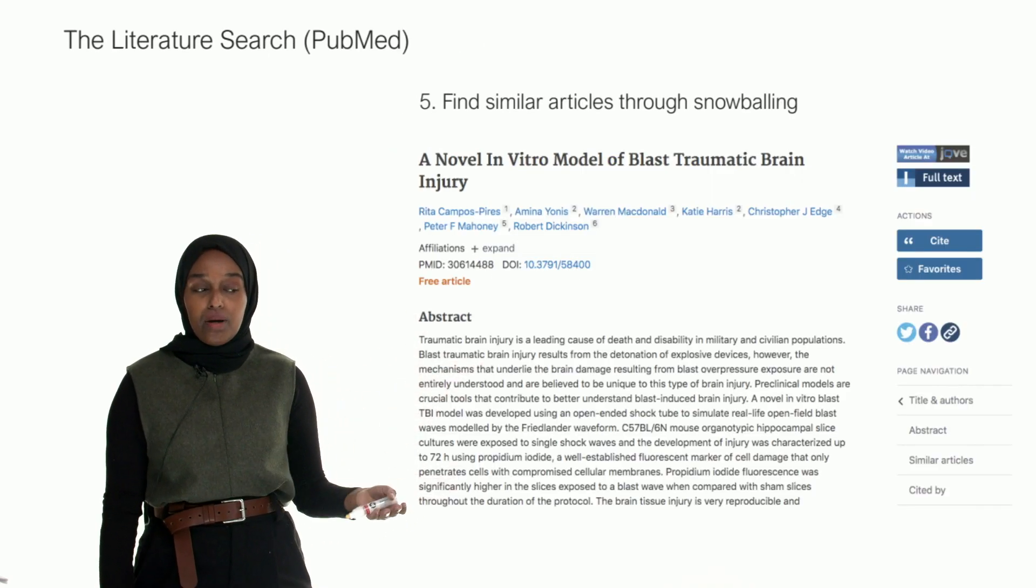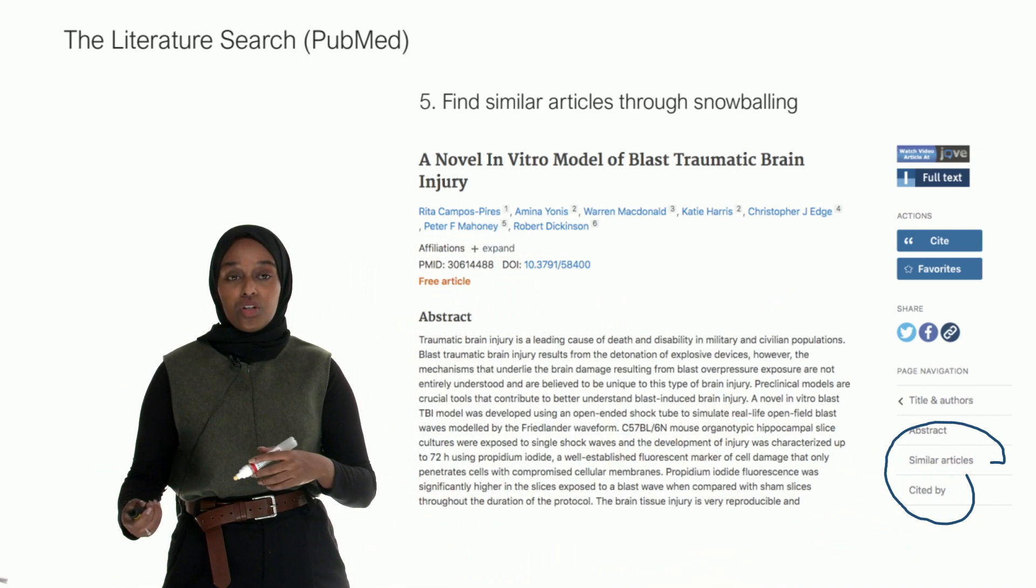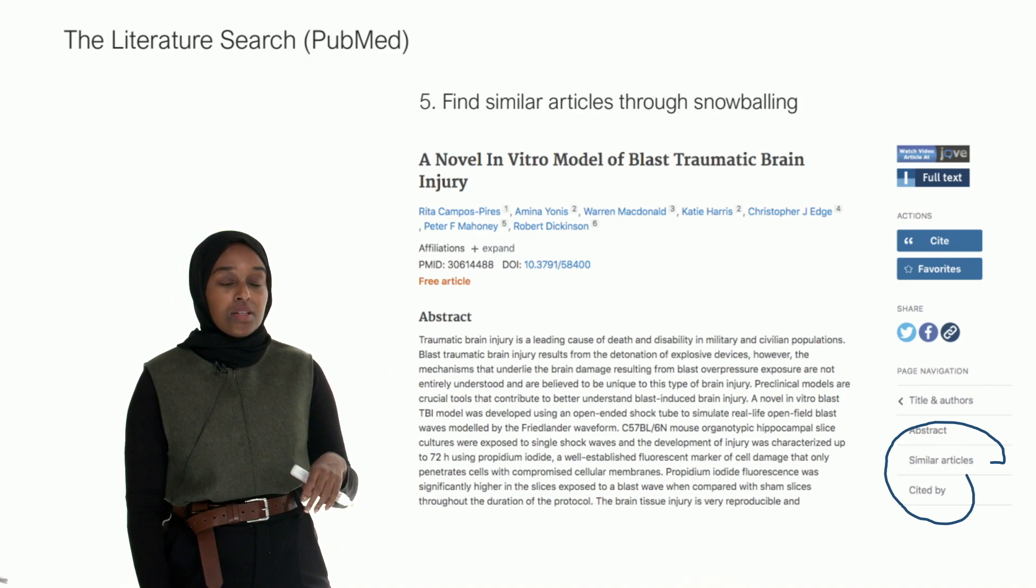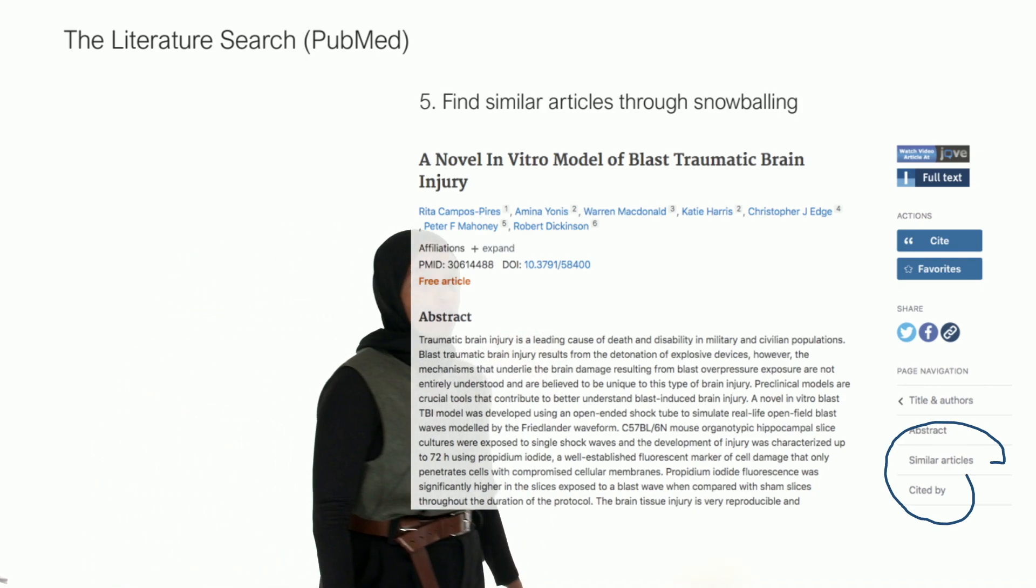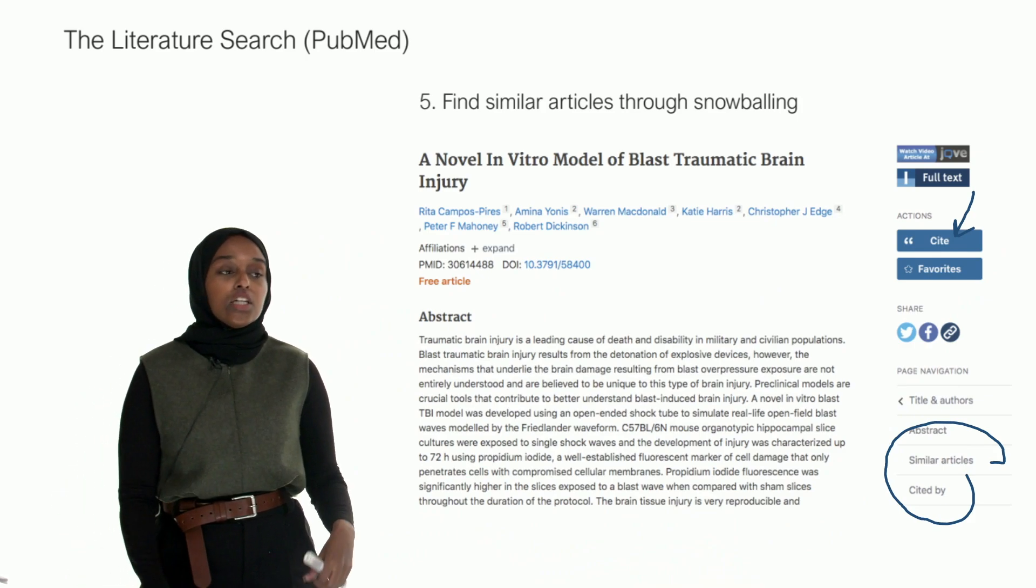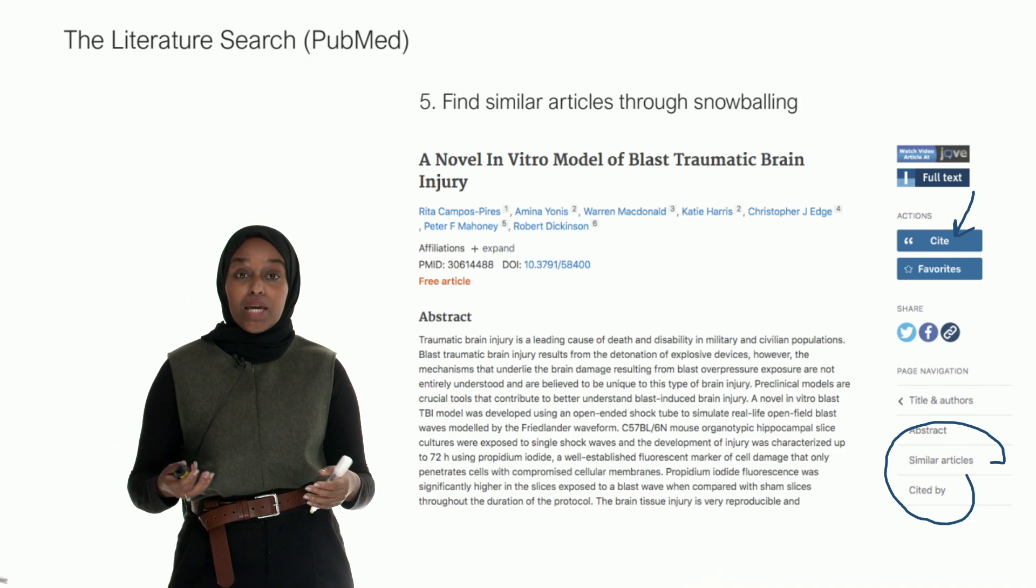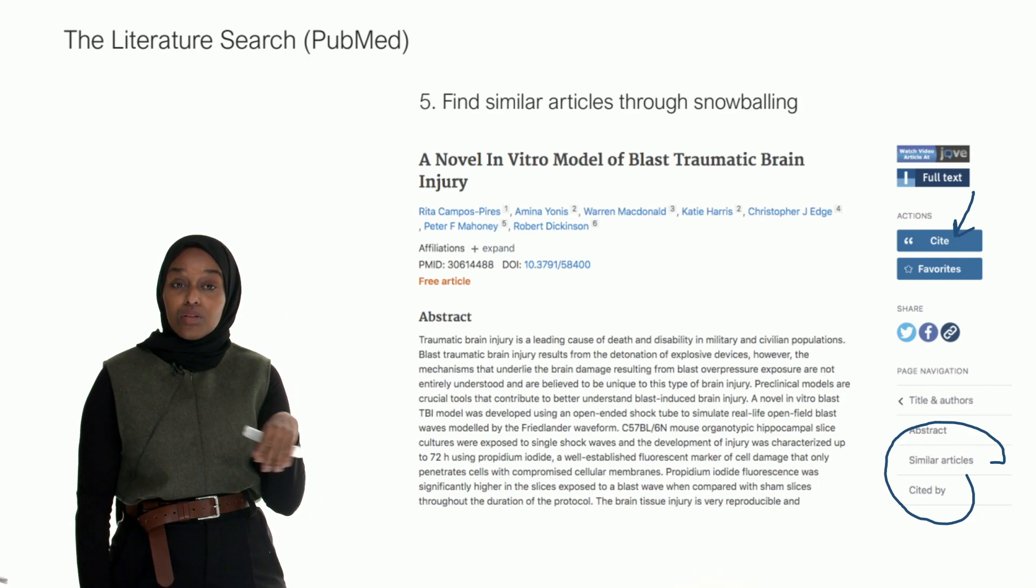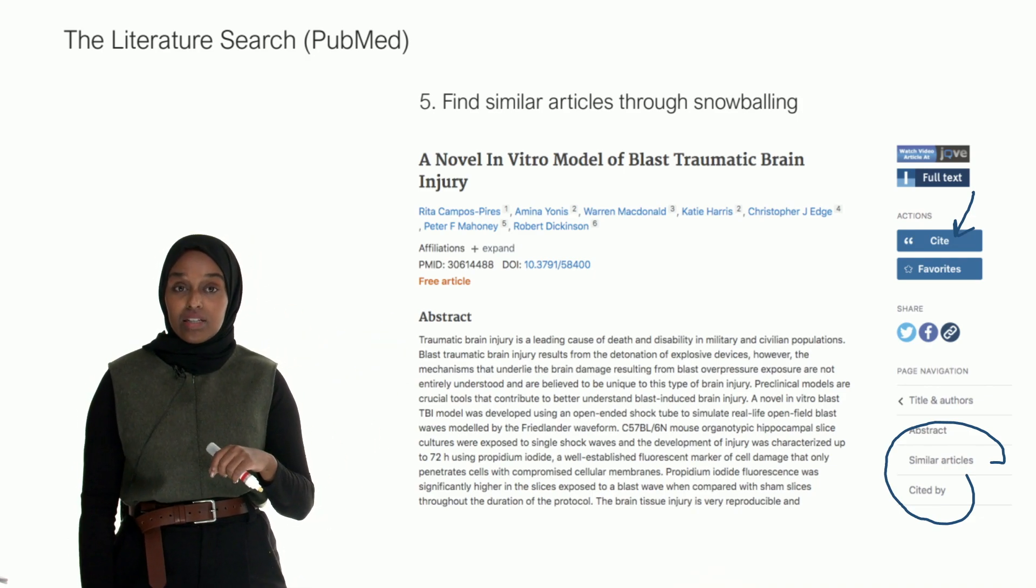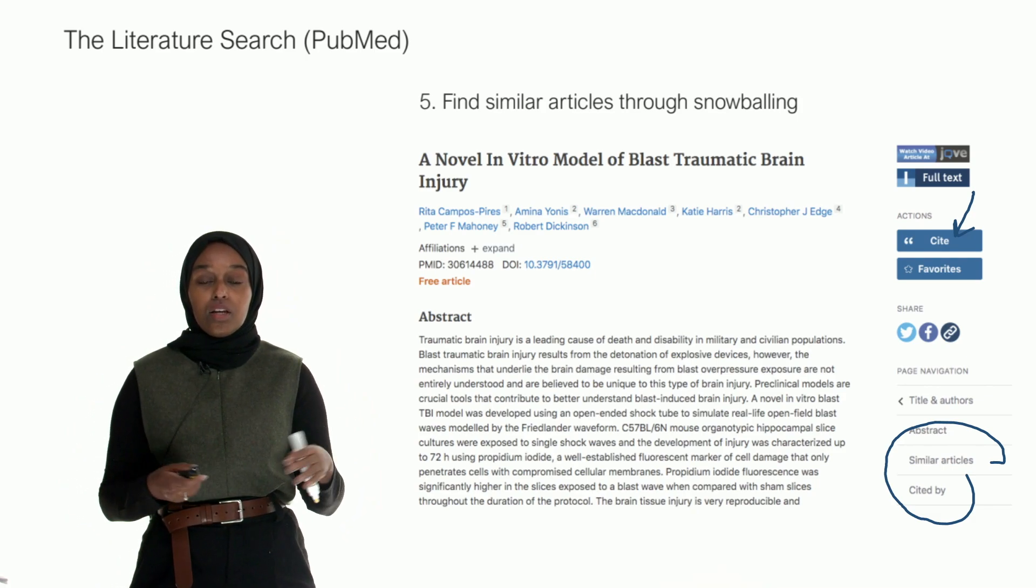This is the same thing but using PubMed. You can see here at the bottom, you have Similar Articles and Cited By. It works in pretty much exactly the same way as Google Scholar. And while we're here on this page, something that I use quite often is the Cite button. I use this to generate a reference quite quickly. You can also favorite a paper if you have your own PubMed login and then you have all your papers there.